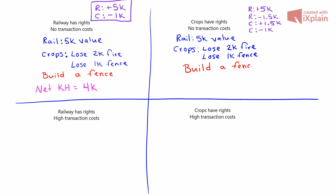The rail owner pays the crop owner to build a fence. The net value of social resources is $5,000 minus $1,500 plus $1,500 minus $1,000, which is $4,000.